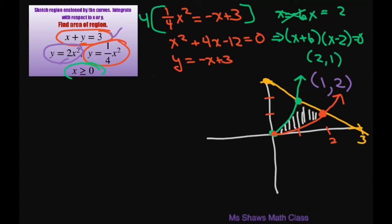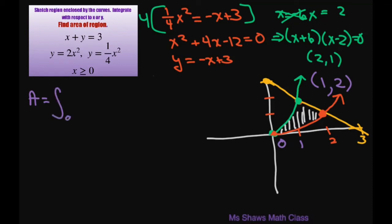I did these in different colors on purpose because we have to set up our upper and lower limits and we're going to have to subtract. First, let's go from 0 to 1. We have all these boundaries here. The upper boundary for 0 to 1 is the green, which is 2x squared. The lower boundary is the red one, so you subtract minus 1/4 x squared dx.